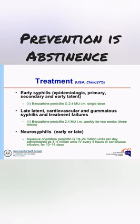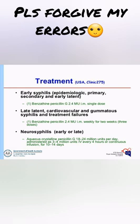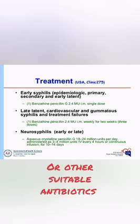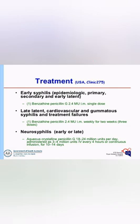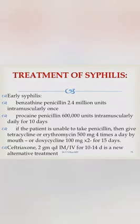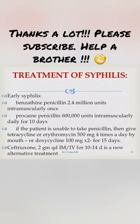The first choice of treatment for all manifestations of syphilis is parenteral penicillin G, which is the only therapy documented to be effective during pregnancy. In non-pregnant individuals with severe penicillin allergy, tetracycline or doxycycline is given. Prevention comes down to protecting yourself from infection and living a healthy life. Thanks so much — see you next time.